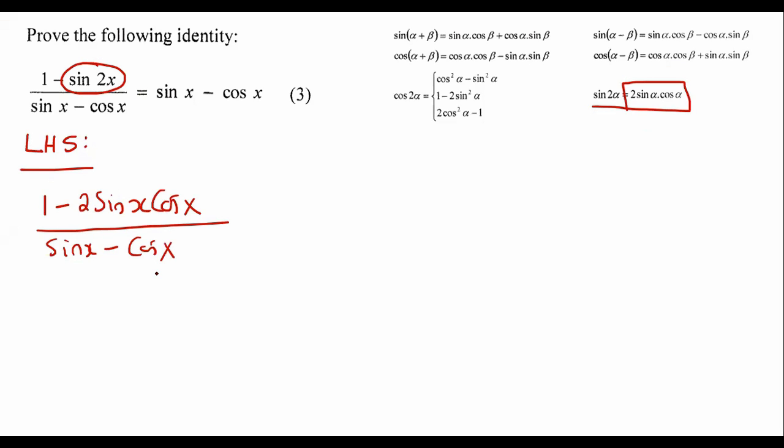Okay, now can you see that we are quite stuck at the moment? It doesn't seem like there is anything that we can do. There is no cos 2x, so we seem like we're pretty stuck.